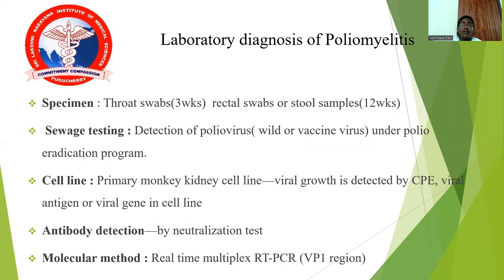For laboratory diagnosis of poliomyelitis, specimens collected include throat swab at 3 weeks and rectal swab or stool samples at 12 weeks. Sewage testing is also conducted under the polio eradication program. Viruses can be isolated using primary monkey kidney cell lines, where cytopathic effect is observed. Antibody detection is done by neutralization test. Molecular methods using real-time multiplex RT-PCR targeting the viral protein 1 region are also performed.